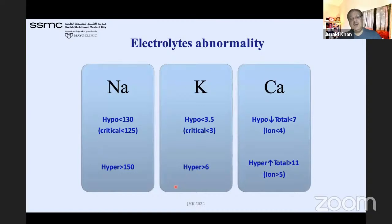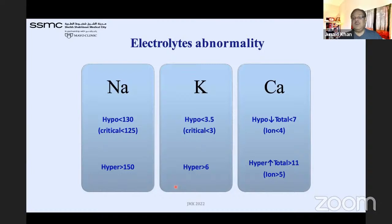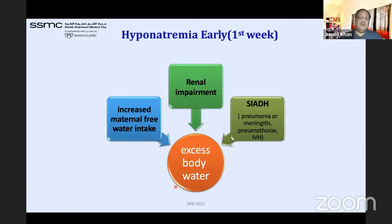Electrolyte abnormalities: hyponatremia is sodium less than 130, hypernatremia is more than 150. Below 126 we start treatment. Hypokalemia is potassium less than 3.5, critical below 3; hyperkalemia is above 6 — but verify the sample is not hemolyzed. Hypocalcemia is total calcium less than 7 mg/dL or ionized less than 4; hypercalcemia is total greater than 11 or ionized greater than 5.